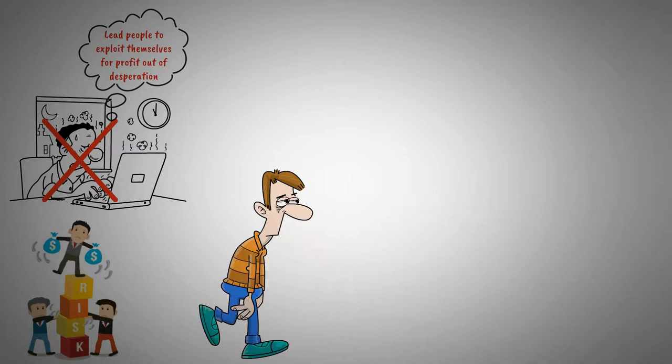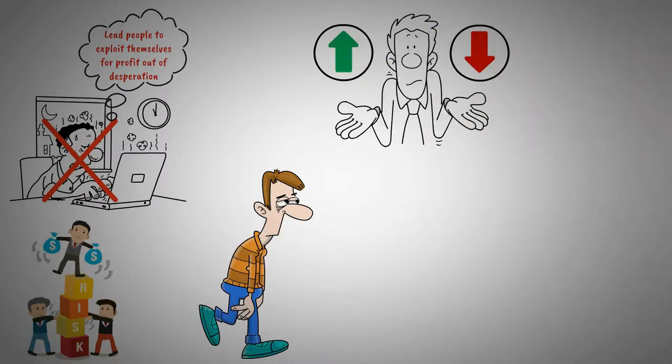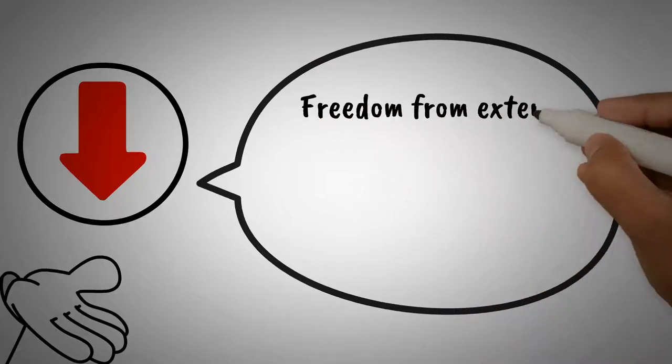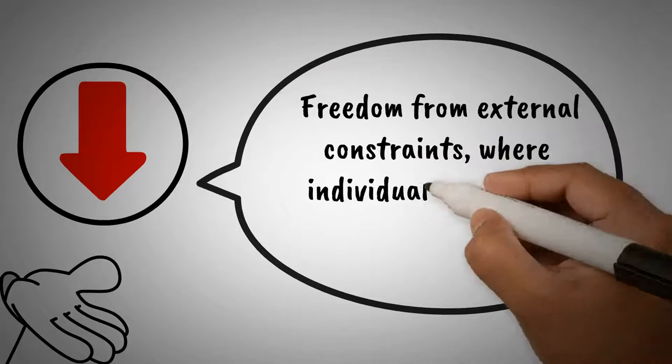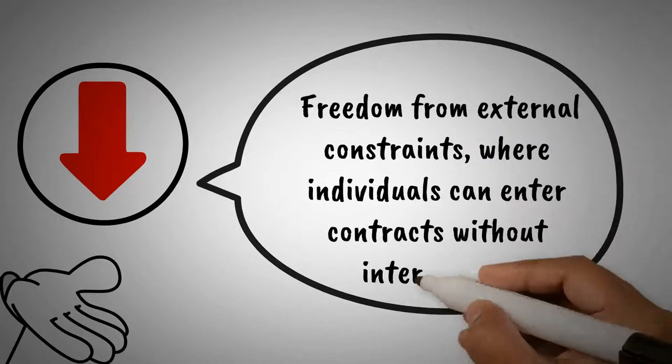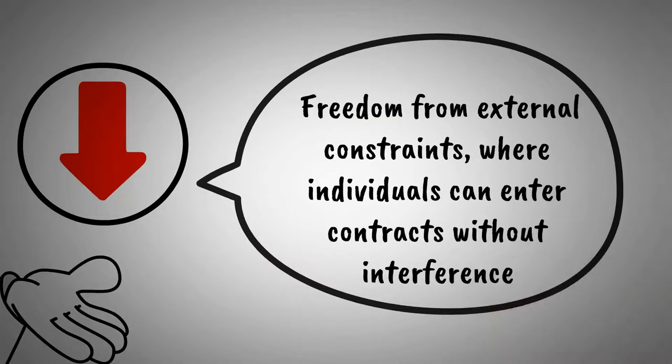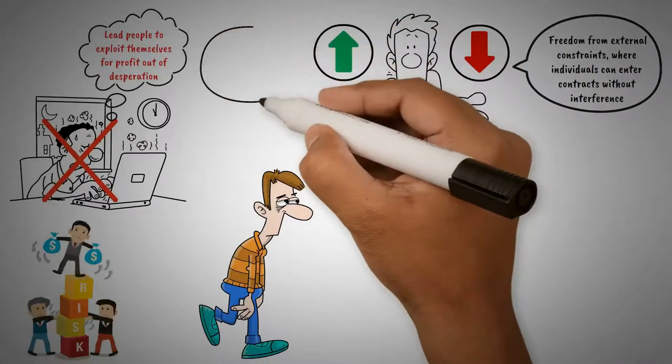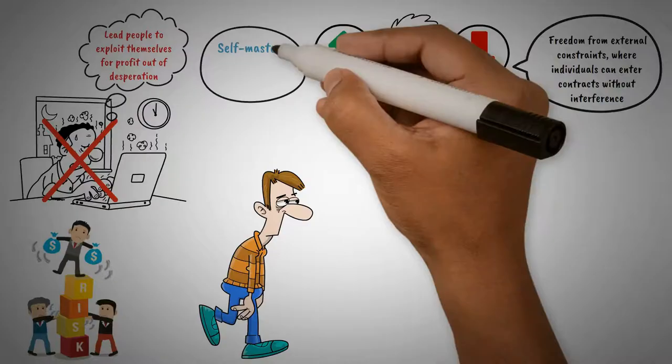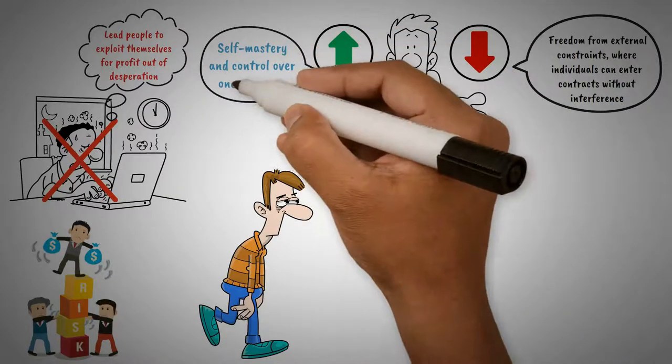Sandel's arguments align with the concept of positive and negative liberty. Negative liberty refers to freedom from external constraints where individuals can enter contracts without interference. However, Sandel emphasizes the importance of positive liberty, which involves self-mastery and control over one's destiny.